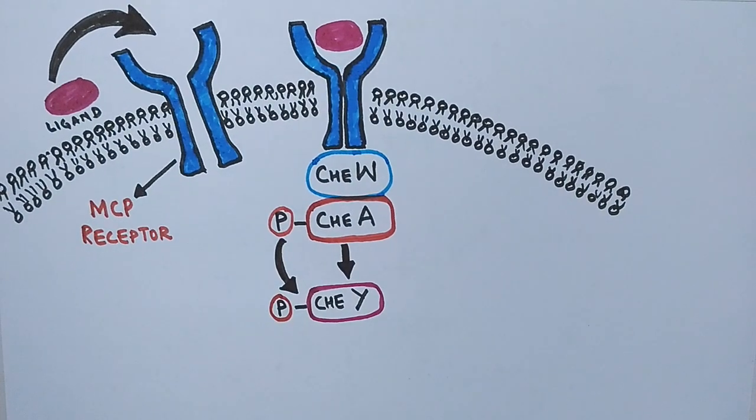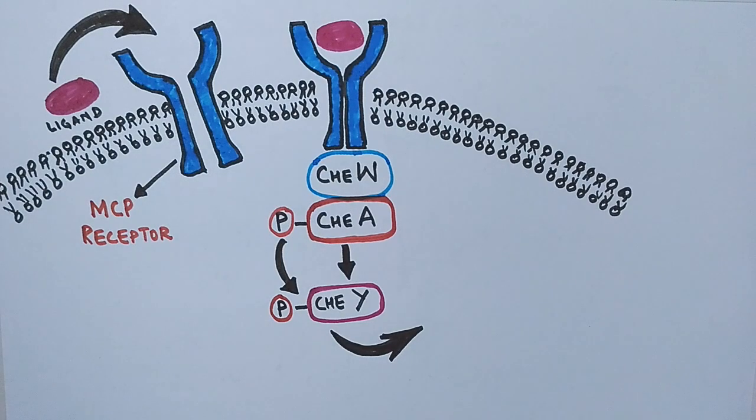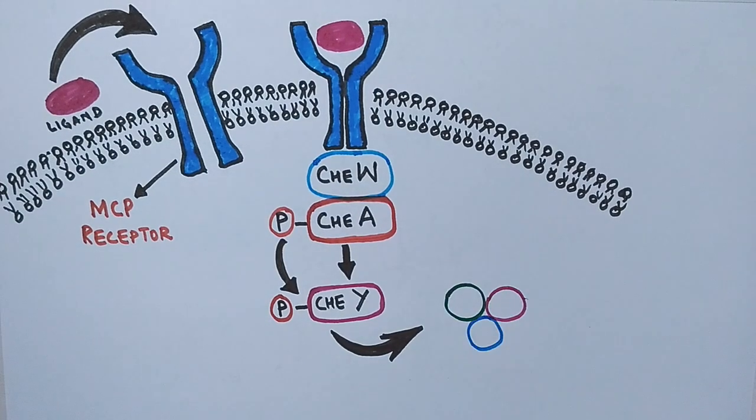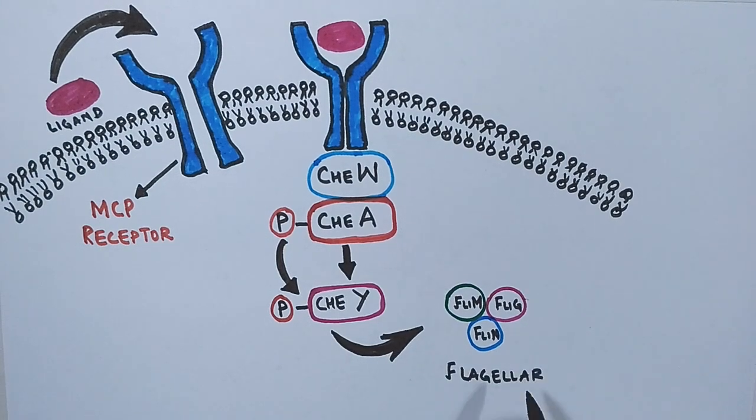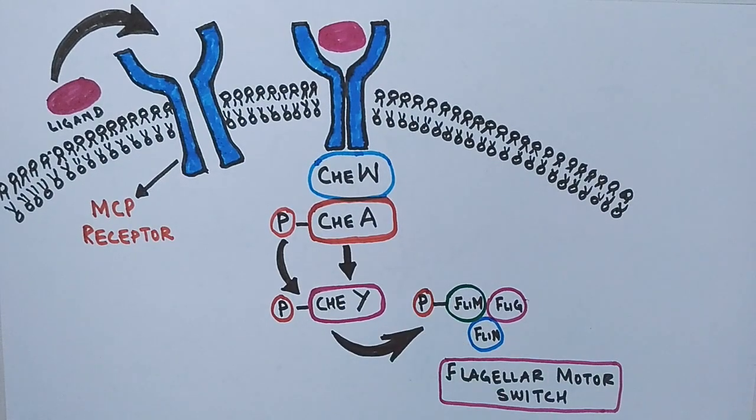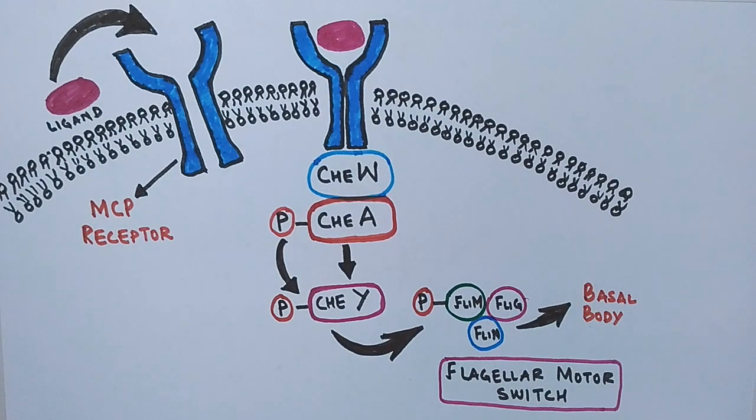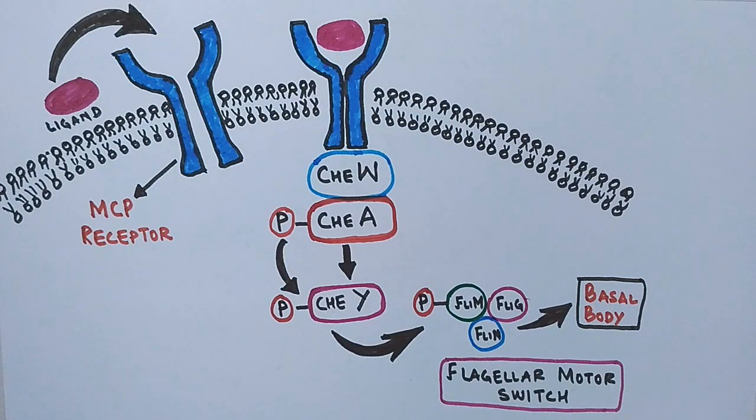Finally, the CheY protein phosphorylates the protein complex composed of three proteins: FliM, FliG, and FliN. This protein complex acts as a flagellar motor switch, and when this CheY protein activates this switch, it gives a signal to the basal body of the flagella to switch the rotation for direction change.